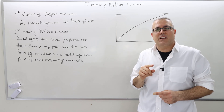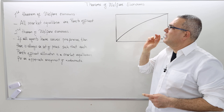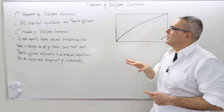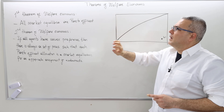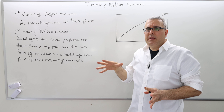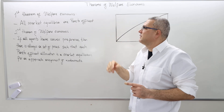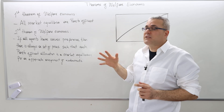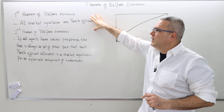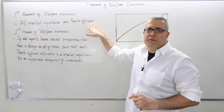This is our last topic in chapter 6: the first and second theorems of welfare economics. I'm going to state them first, explain what they mean, and then do some exercises — these make very good exam questions. The first theorem of welfare economics says all market equilibrium outcomes are Pareto-efficient.